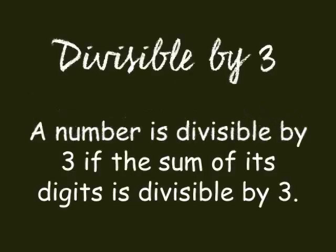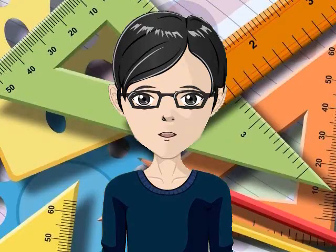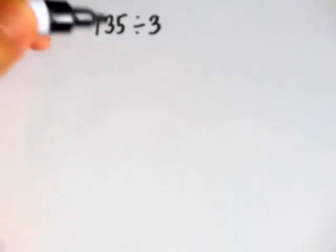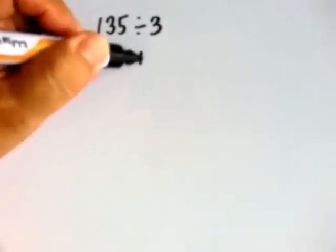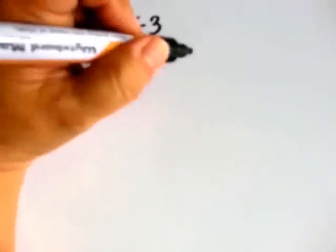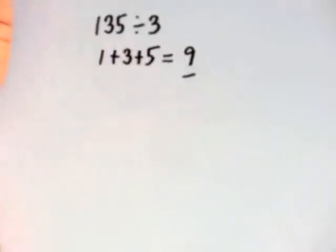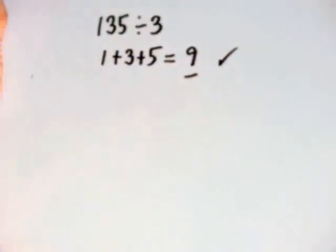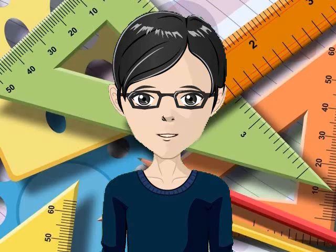To check if a number is divisible by 3, you must add the digits. If the sum of the digits is divisible by 3 — meaning it's in the multiplication table of 3 — then the number is divisible by 3. Is 135 divisible by 3? We add the digits: 1 plus 3 plus 5 equals 9. 9 is in the multiplication table of 3. So 135 is divisible by 3. Mas madaling isipin kung divisible by 3 yung 9 kaysa sa 135, di ba?